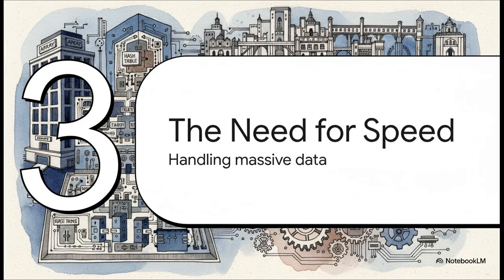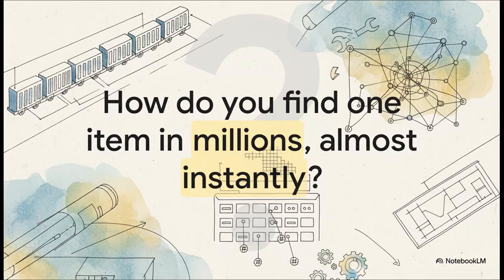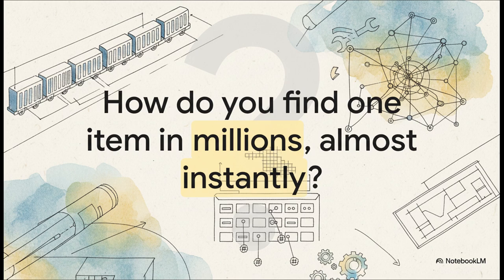So far we've been dealing with pretty simple lists, but modern apps deal with just enormous amounts of data. So what happens when your list doesn't have 10 items, but 10 million? Just walking through the list one by one is no longer an option. We have a serious need for speed. This is the key question that pushed us to the next level of data structures. Searching through a million items one by one could take forever. We need a way to find a needle in a haystack, and we need to do it in the blink of an eye. How is that even possible?